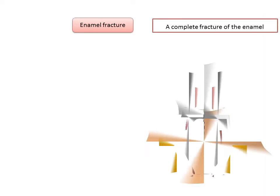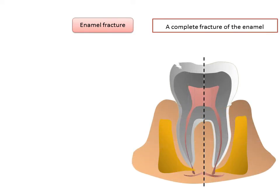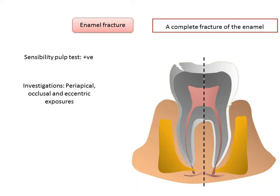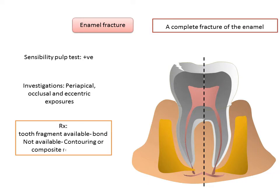Enamel fracture: the sensibility pulp test is usually positive, the tooth is non-tender, and enamel loss is visible. Periapical, occlusal, or eccentric radiographic exposures are recommended. If the tooth fragment is available, it can be bonded to the tooth; otherwise, contouring or restoration with composite resin is done depending on the extent and location of the fracture. A follow-up of six to eight weeks or up to one year is recommended.